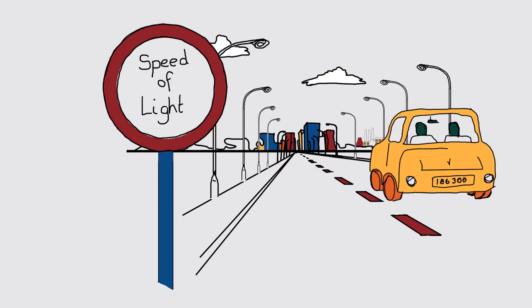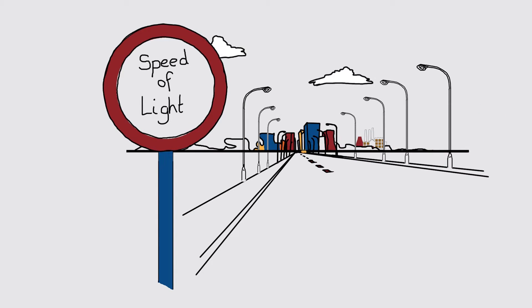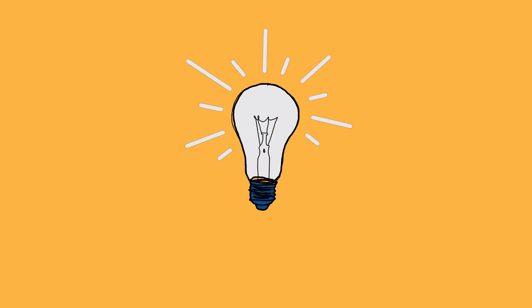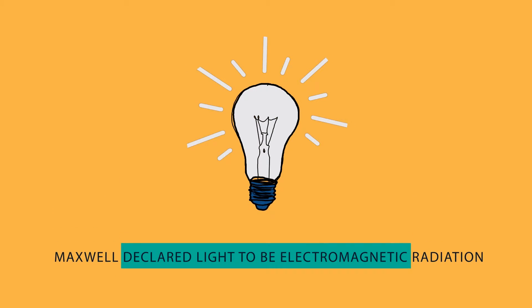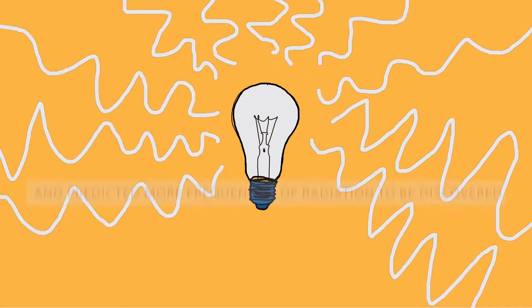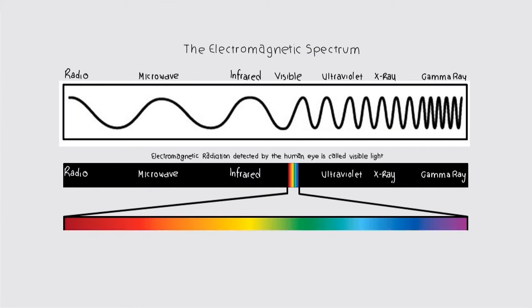Maxwell didn't think this was a coincidence and declared light to be electromagnetic radiation. Furthermore, Maxwell predicted that there would be other frequencies of radiation waiting to be discovered. This is what we call the electromagnetic spectrum.